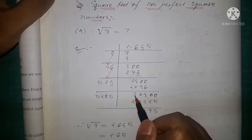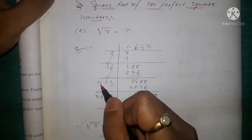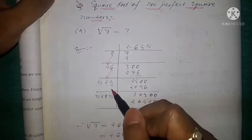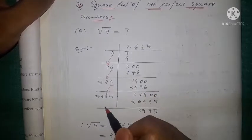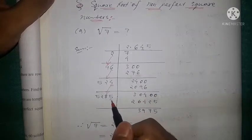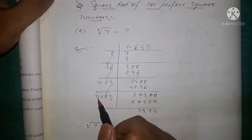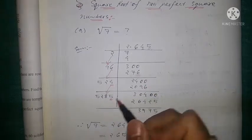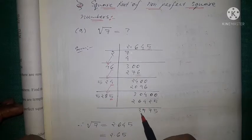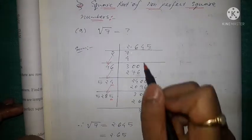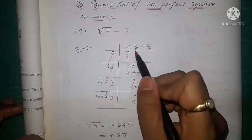This 5 comes down as it is, this 2 comes down as it is, and this 4 is doubled to become 8. Whatever number we multiply here, the same number we write here. So 5285 × 5 = 26425, and the remainder is 3975.